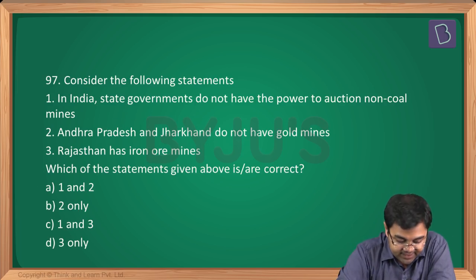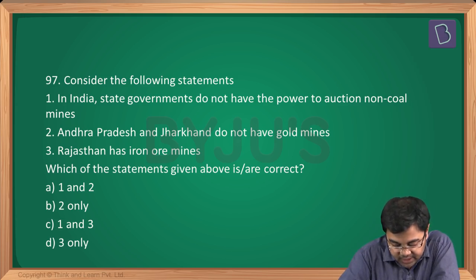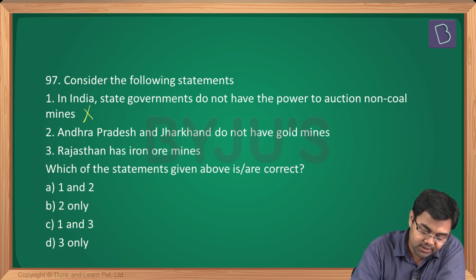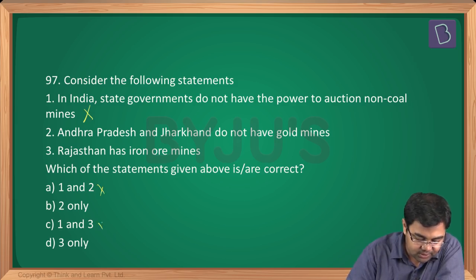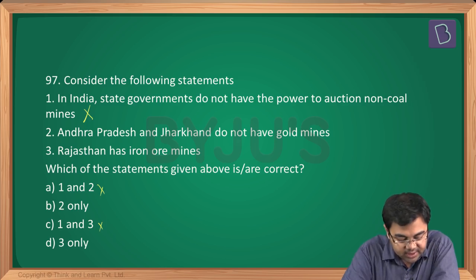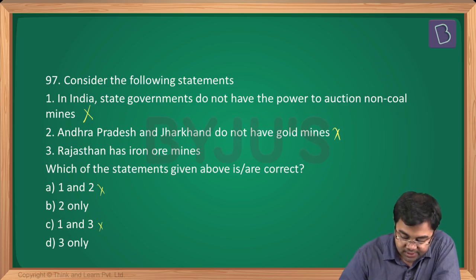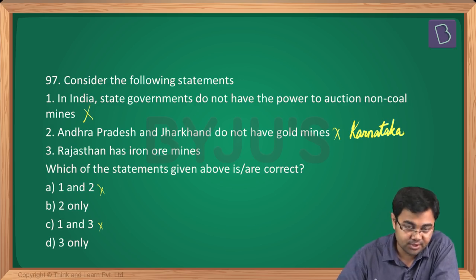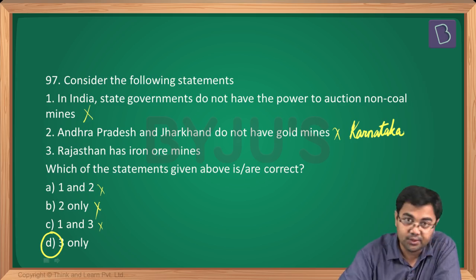Question number 97: Statement 1 says state governments in India do not have the power to auction non-coal mines — false, they do have this power. Statement 2 says Andhra Pradesh and Jharkhand do not have gold mines — again false; gold mines exist in Jharkhand, Andhra Pradesh and Karnataka. Both statements being wrong, we are left with option D — statement 3 only.